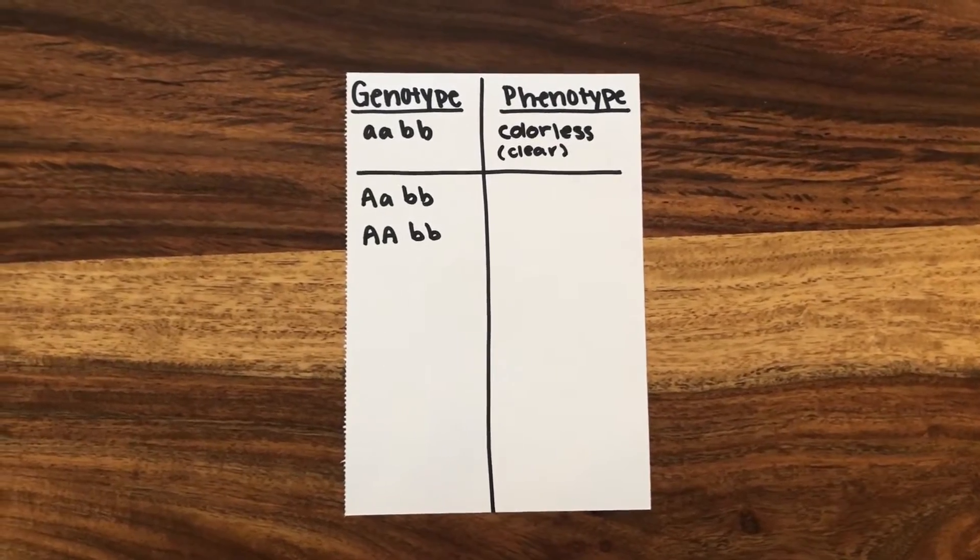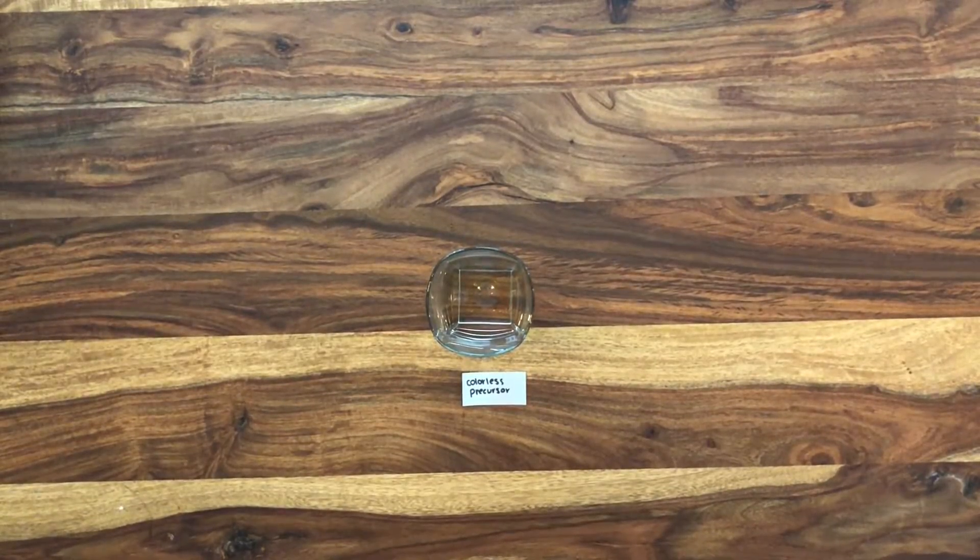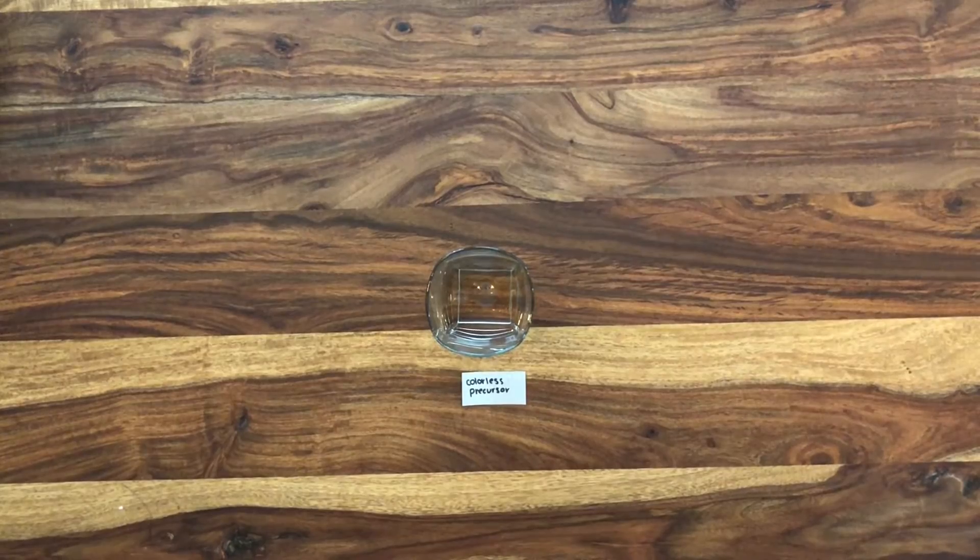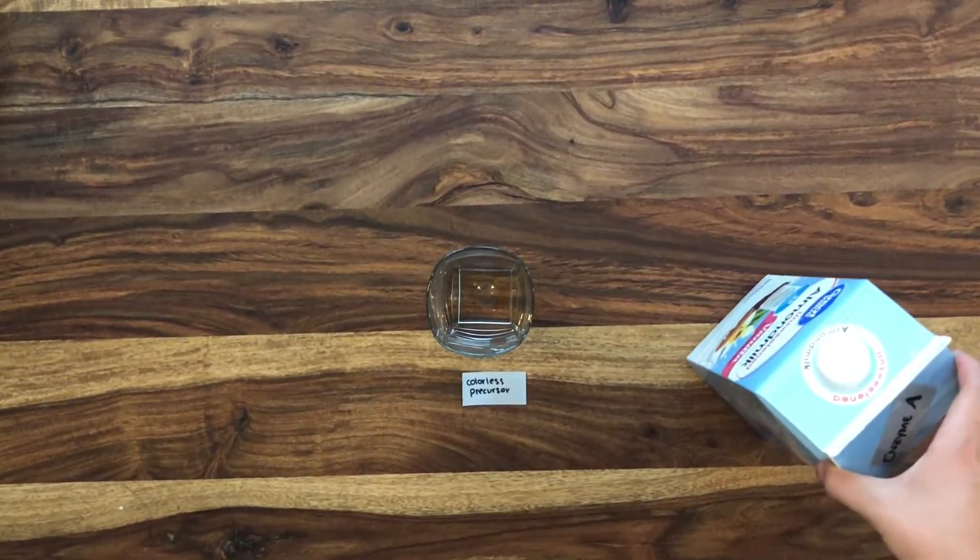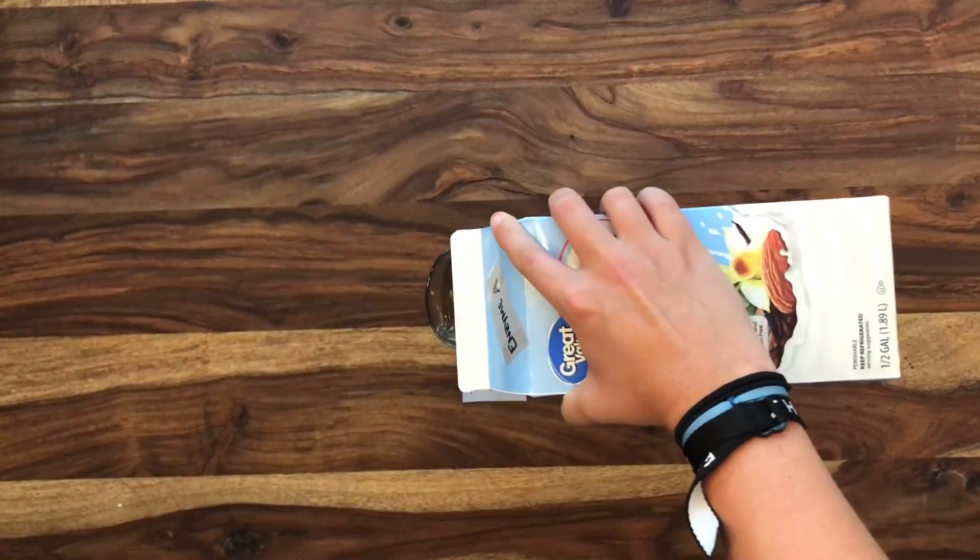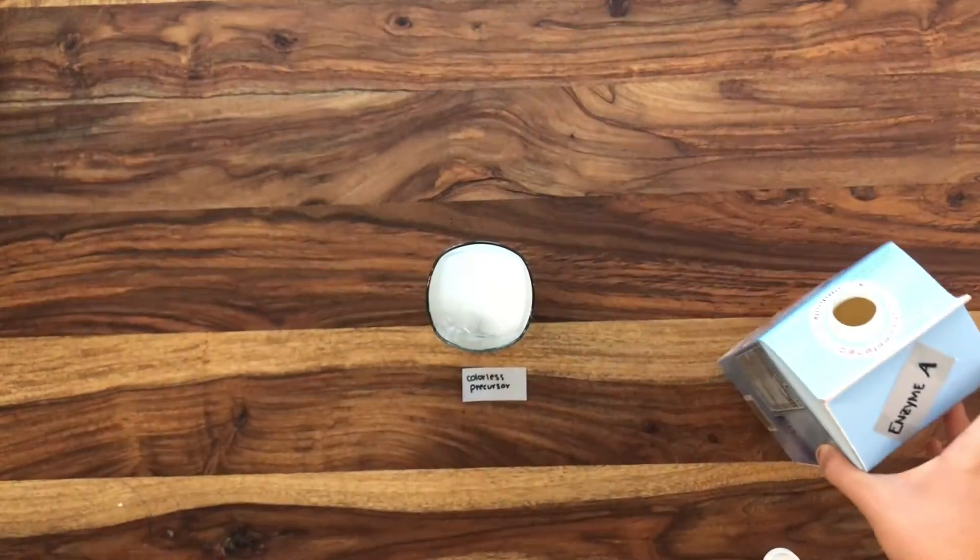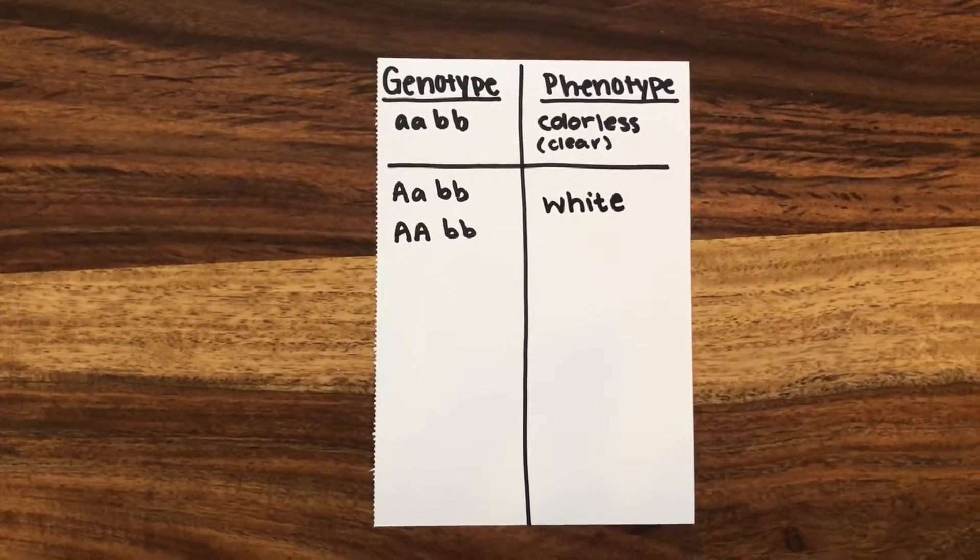Now let's say at locus A, at least one of the alleles in the particular genotype is the uppercase A. Because the uppercase A allele is present, enzyme A, almond milk, is produced in the individual. This produces a white phenotype in the glass as opposed to the colorless precursor.